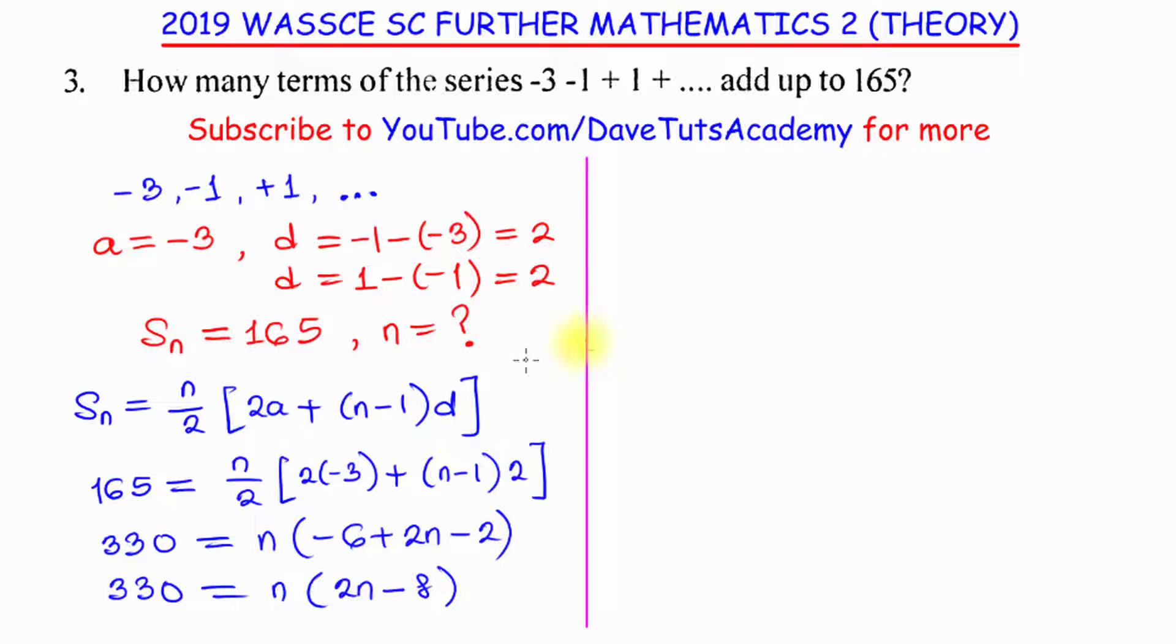So, if we just move all of this to one side, I can have 2n times n will be 2n square. Then, n times minus 8 will be minus 8n. Then, 330, if it comes to this side, it will become minus 330 and the sum of all this will give us 0.